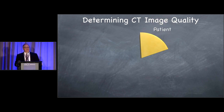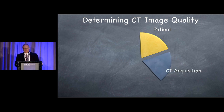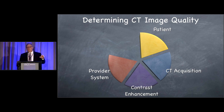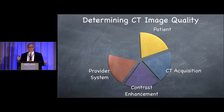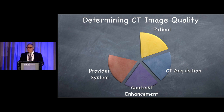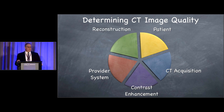Determining CT image quality, I really see six primary factors. The patient themselves is a huge influence. The way we design our CT acquisition is a big influence, as is the way we design our contrast administration and the provider system we're in. Sometimes we can have the most ideal patient, the best scanner, the best physician, and it's all the stuff that happens in between — communication with technologists, nursing, scheduling — that can defeat us. And then finally, the reconstruction of the data.